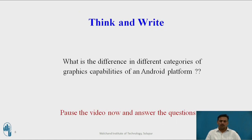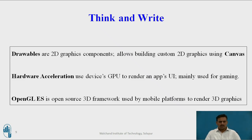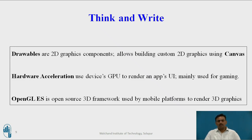There is one question for you: what is the difference between the different categories of graphic capabilities of the Android platform? There are three categories. Drawables provide 2D graphics components for building 2D graphics, and same for Canvas. Hardware Acceleration gives a boost by making the GPU more accessible, used for applications like gaming. OpenGL is an open-source 3D framework used by the mobile platform to render 3D graphics.